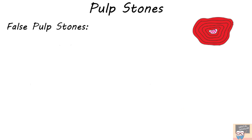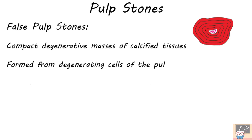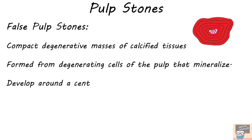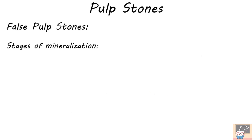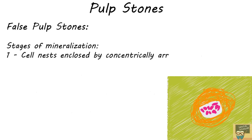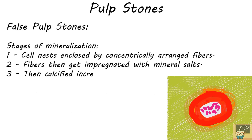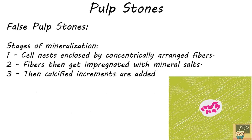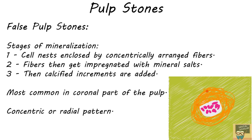False pulp stones are compact degenerative masses of calcified tissue formed from degenerating cells of the pulp that mineralize, around a central nidus of pulpal tissue such as collagen fibrils, ground substance, or necrotic cell remnants. The stages of formation include: degenerating cells or cell nests first enclosed by concentrically arranged fibers, which then get impregnated with mineral salts, with calcified increments added continuously. This produces a lamellated structure due to layer-by-layer deposition. False pulp stones are more common in the coronal part of the pulp and show a concentric, radial, or lamellar pattern.